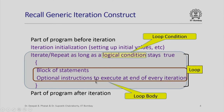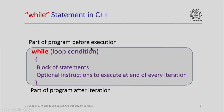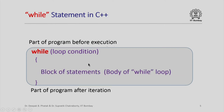In C++ we can implement this using the while construct. We say: while (loop condition) { block of statements }, and the optional instructions to be executed at the end of every iteration can be grouped with this block of statements. Similarly, the initialization part can be grouped with the part of the program before iteration. So we have a part of the program before the loop, the while loop body itself, and then the part of the program after the while loop.